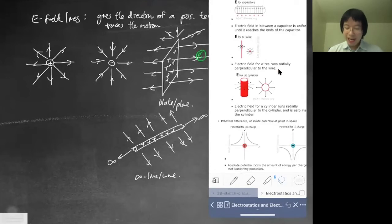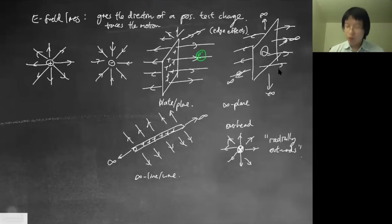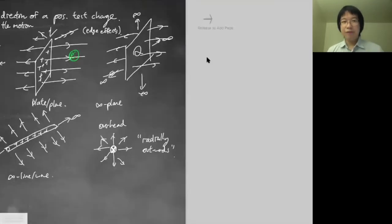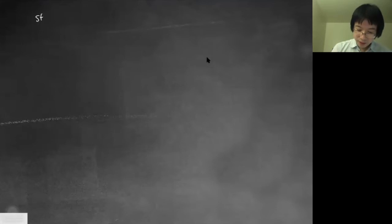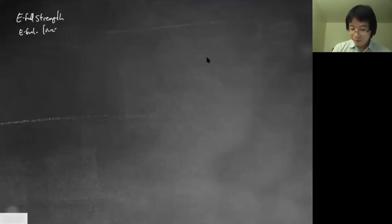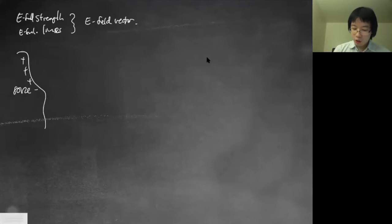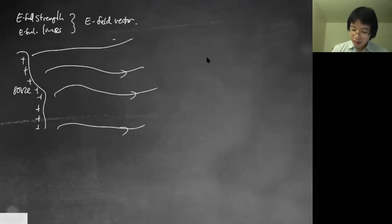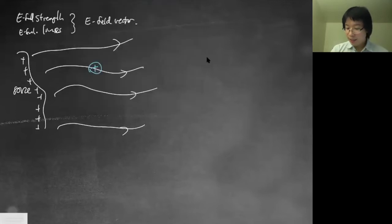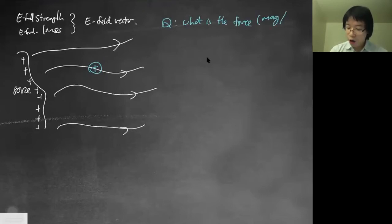Essentially the field lines give the direction of what happens to anything you place at a given point. Now you have two ideas: direction and magnitude. You can combine those into an electric field vector. Let's say I have some source and I draw its field lines, and I want to ask: what is the force — both magnitude and direction — on a charge Q placed near it?